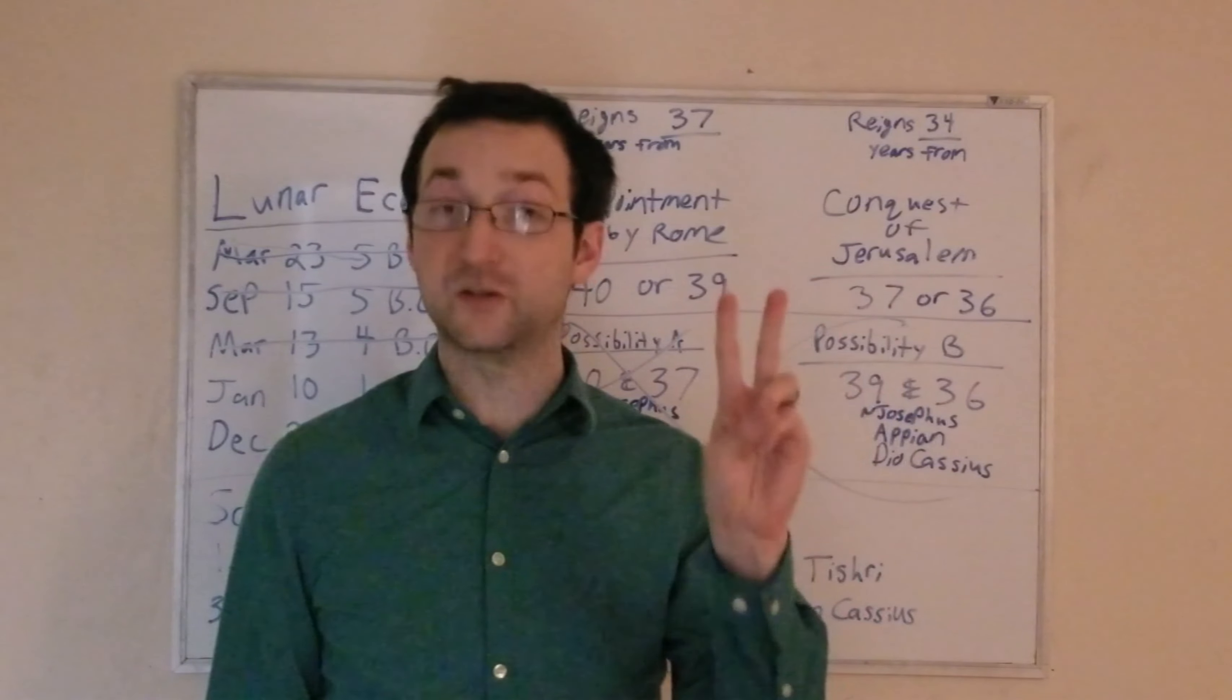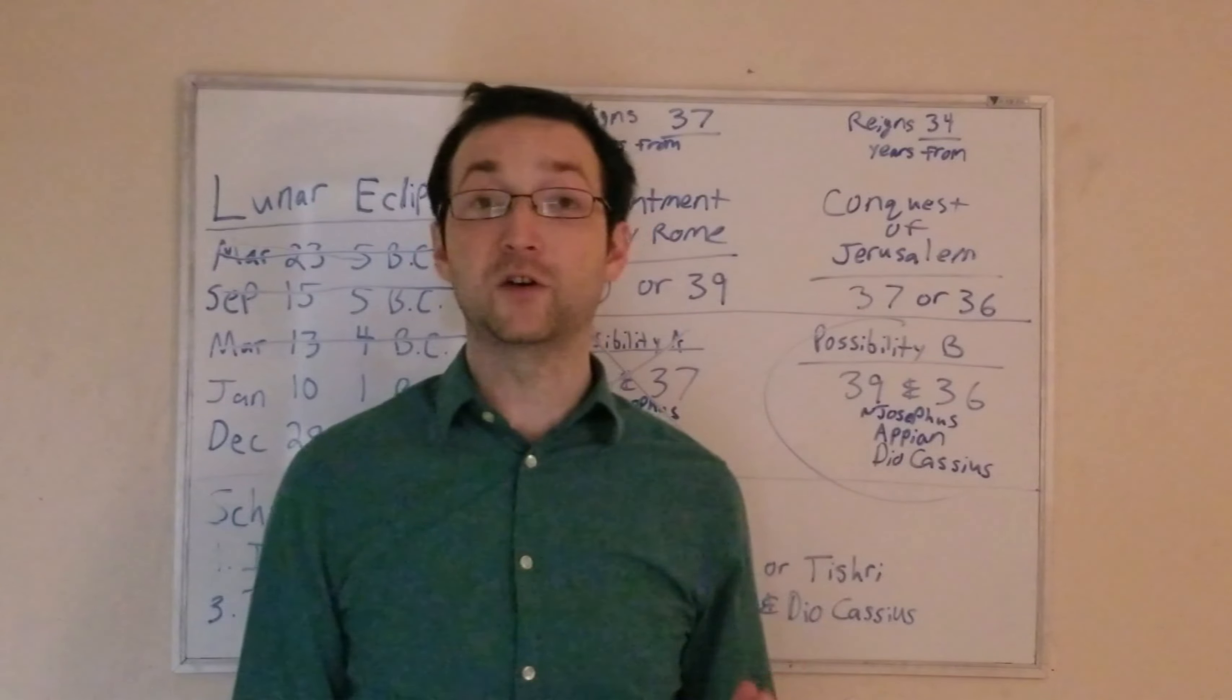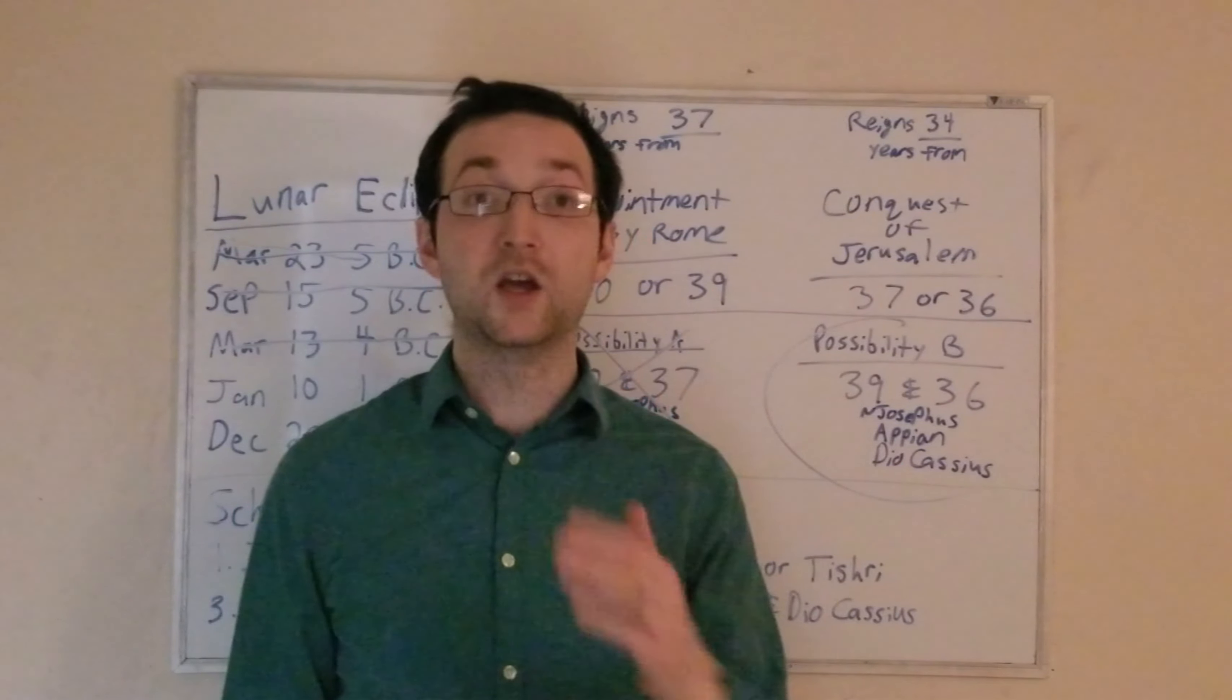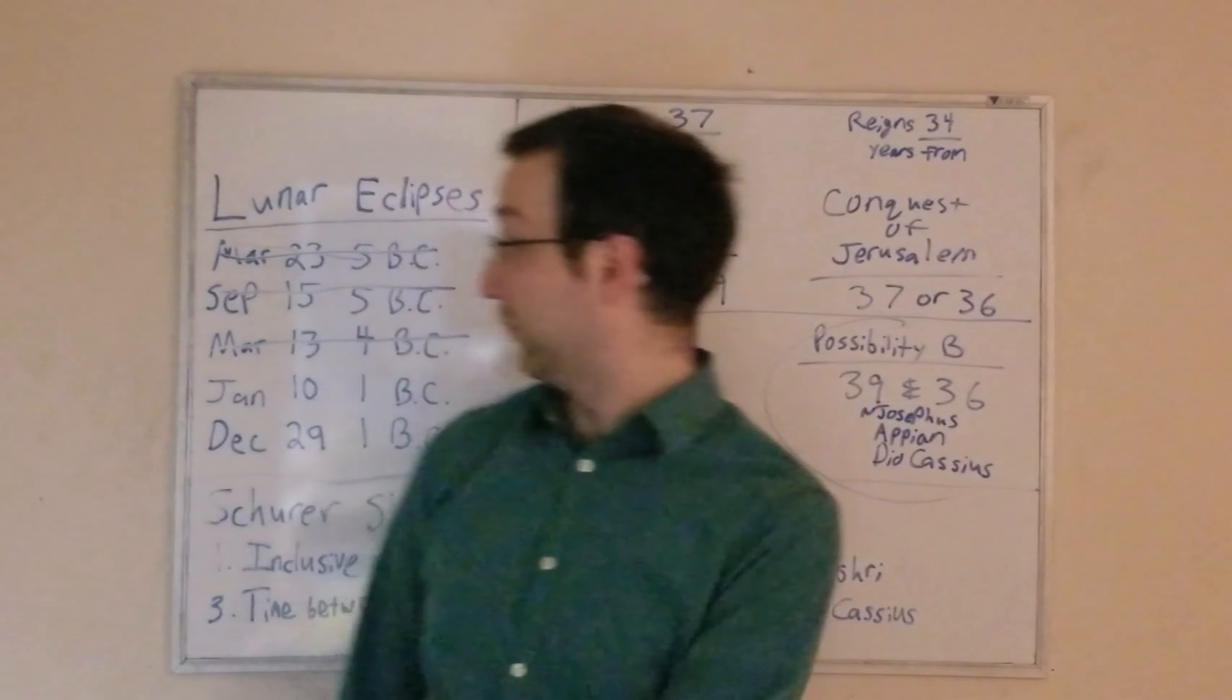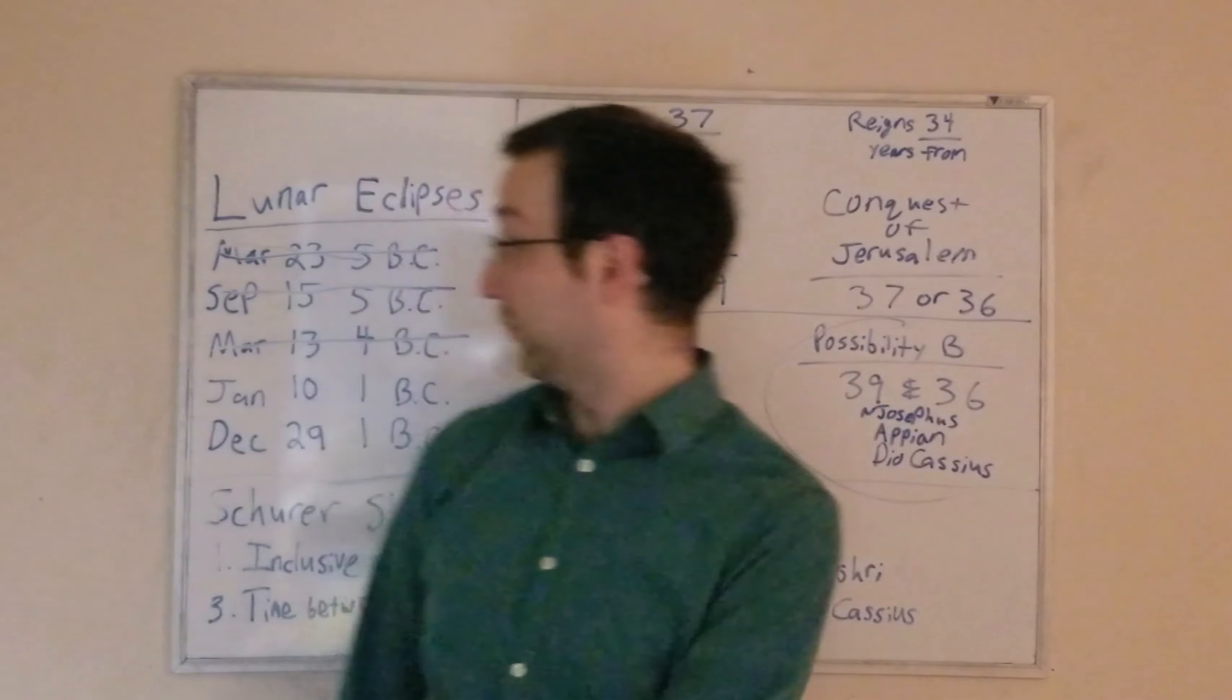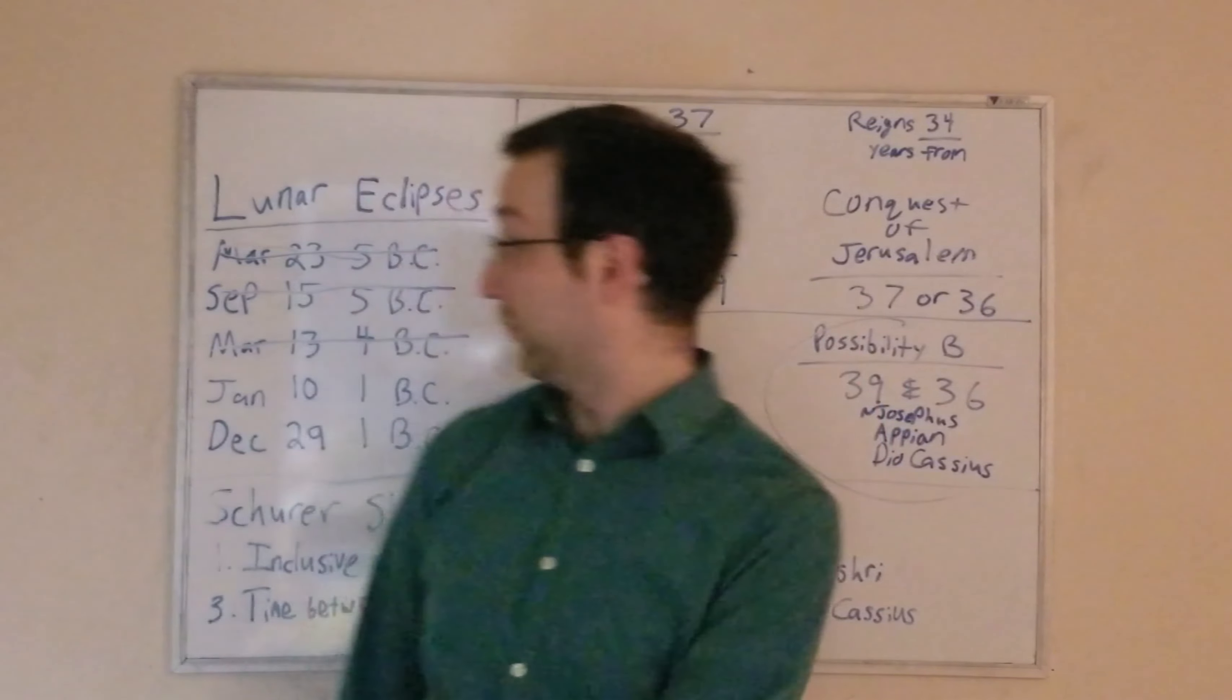If Herod's reign is reckoned from the 1st of Nisan in the spring, then that would make 39 BC until the 1st of Nisan in 38, the accession year. Then in the spring of 38, we begin year 1, which goes until the spring of 37. Year 2 goes from the spring of 37 to the spring of 36, and so on.